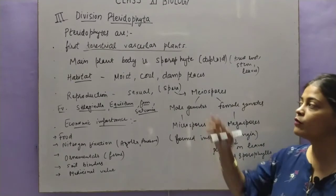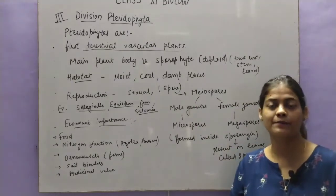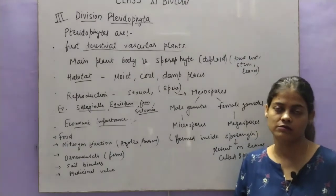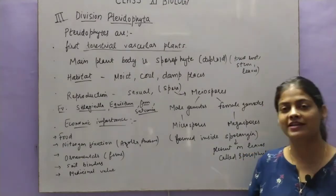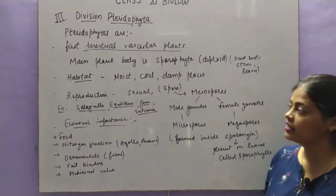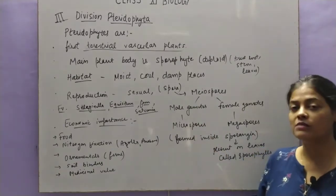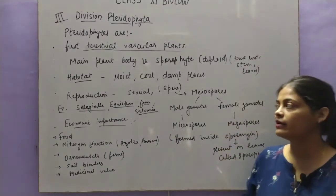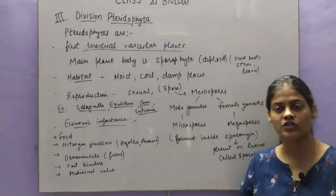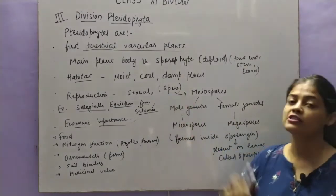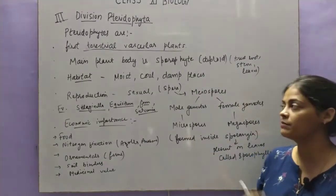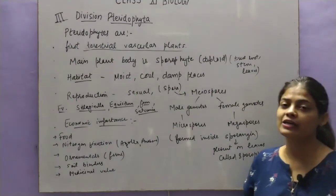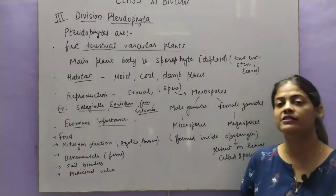The habitat: they are generally found in moist, cool, damp and shady places. Since it is a terrestrial plant, it is mostly found in moist areas. Regarding reproduction, there is a sexual mode of reproduction and it is due to spore formation — as we studied in bryophytes as well.